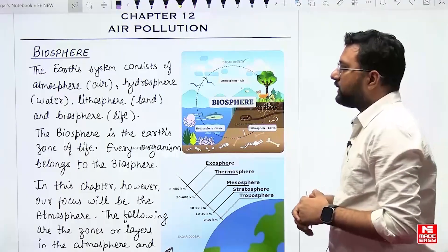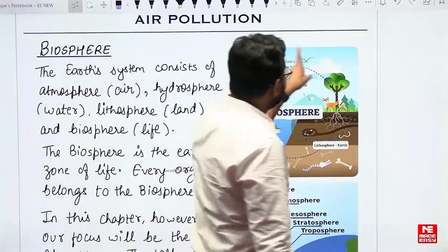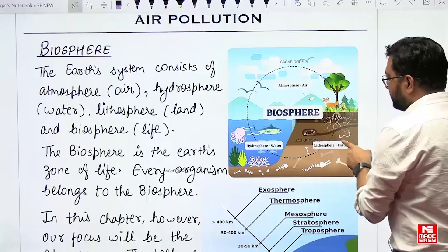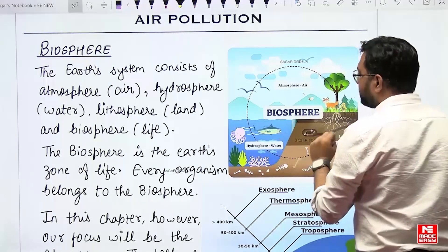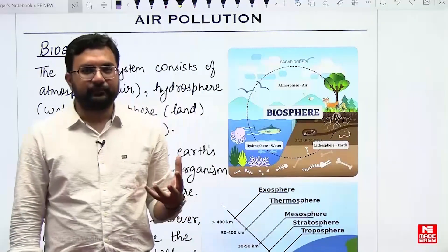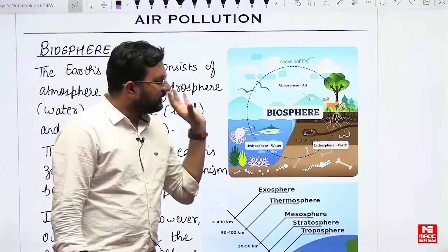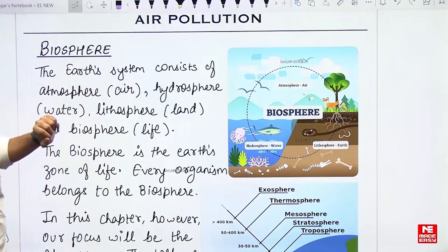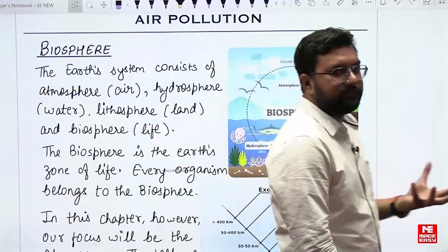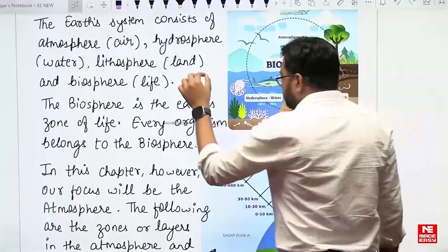The first thing is Biosphere. What is Biosphere? As you can see from this particular diagram, the Biosphere is a combination of Lithosphere that is Earth, Hydrosphere that is water, and Atmosphere that is air, where the living organisms are living, surviving, and growing in numbers. That whole combination of spheres is referred to as Biosphere. The Earth system consists of Atmosphere, Hydrosphere, Lithosphere, and Biosphere. Biosphere is the Earth's zone of life.